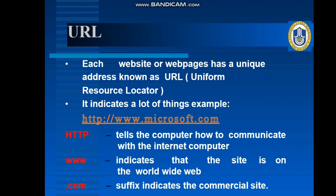Now the next topic is URL. That is also correlated to the previous topics. Each website or webpage has a unique address and that is known as URL, or Uniform Resource Locator. Because if all the websites had the same name, we couldn't recognize them — if your school website and some other website had the same name, how could you recognize that this is your school website? For example, here is www.microsoft.com.